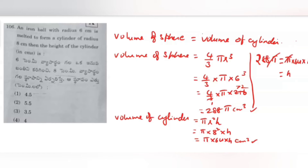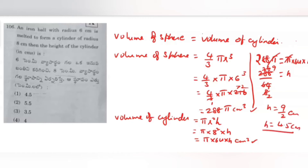So h equals 288 divided by 64. In the 8-times table: 8 eights are 64, 8 threes are 24, 8 sixes are 48. After cancellation, h equals 9 by 2, which is 4.5 centimeters. The h value is 4.5. Option 1 is the correct answer.